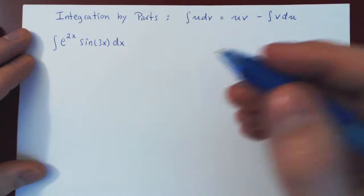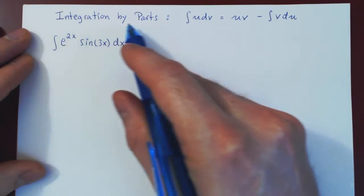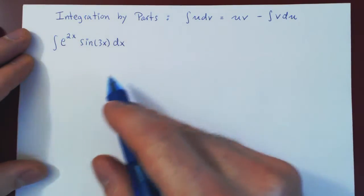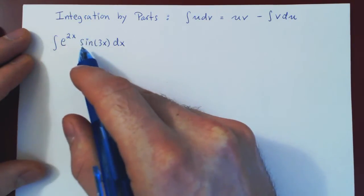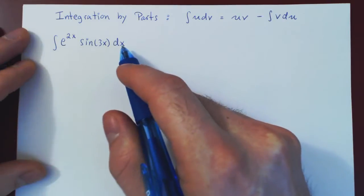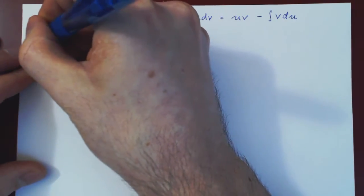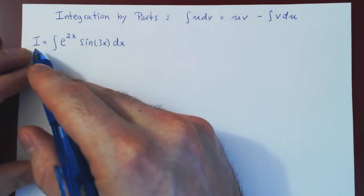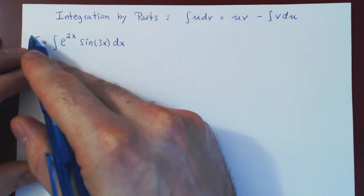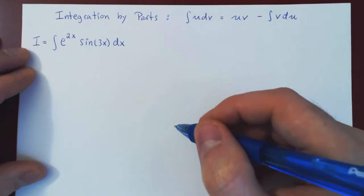In this video, we will consider a special case of integration by parts by trying to integrate e to the 2x sine of 3x dx. I will call this integral I, and the reason for this should be apparent later in the solution.